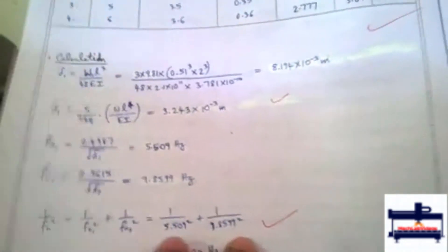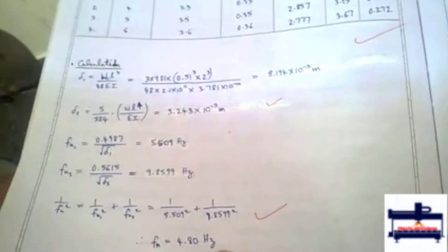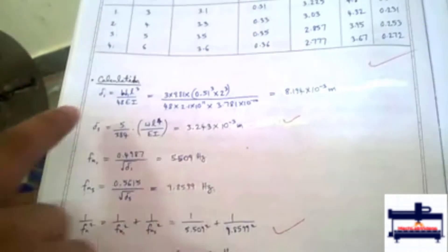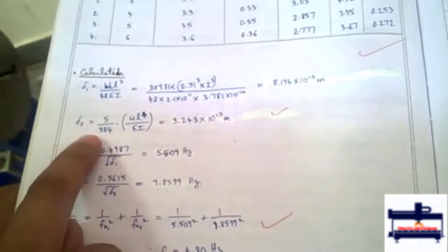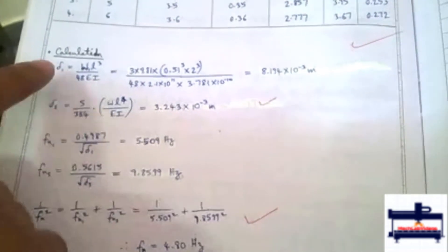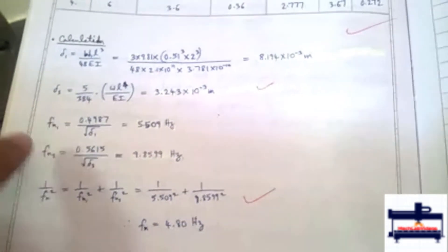Then for finding the theoretical frequency, we use Dunkerley's formula. First we have to find out the deflection due to point loading and due to UDL. For point loading this is the formula and for UDL this is the formula.